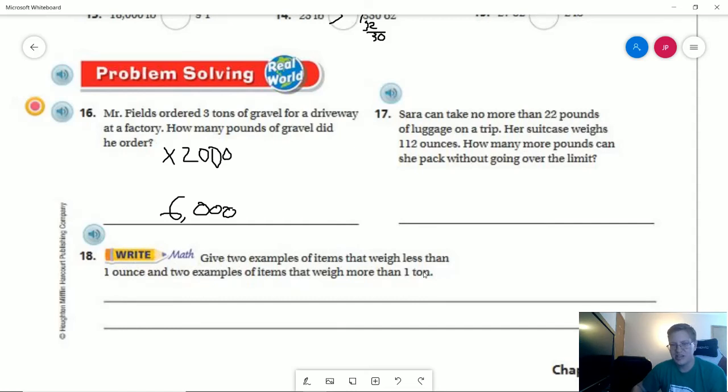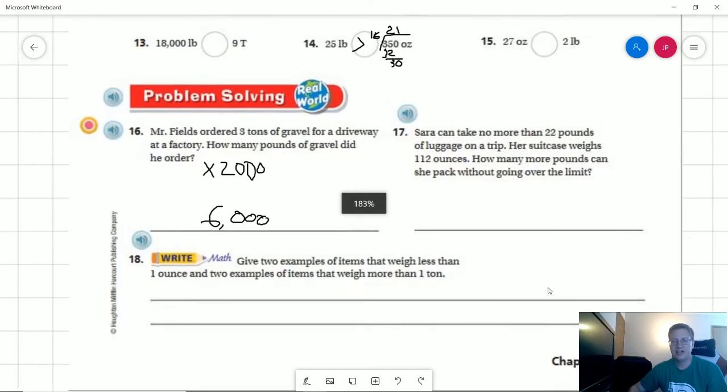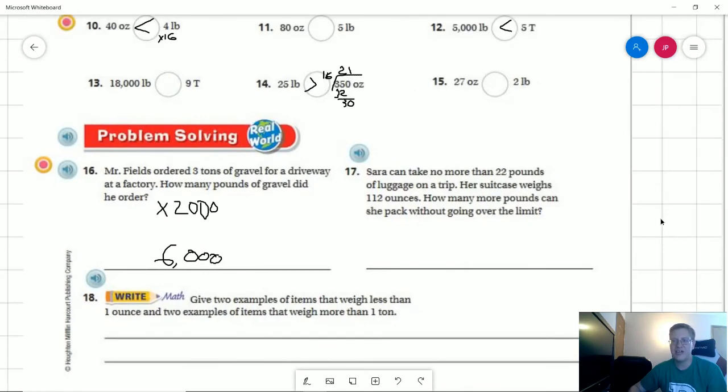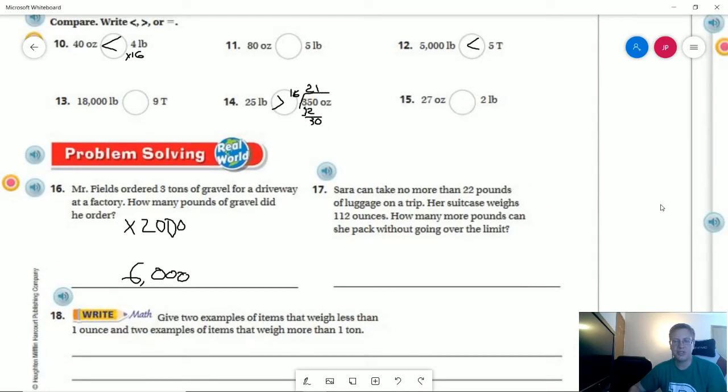Examples for things that weigh more than a ton: things that we have lying around inside a house that weigh more than 2,000 pounds, probably not going to have anything. We're going to be looking at vehicles, so like a car or a truck or a school bus or an entire building would weigh more than one ton. The heaviest thing that I can think of that I have in my apartment is probably going to only be a couple hundred pounds, and so I would need 10 of those all together to be able to equal one ton.